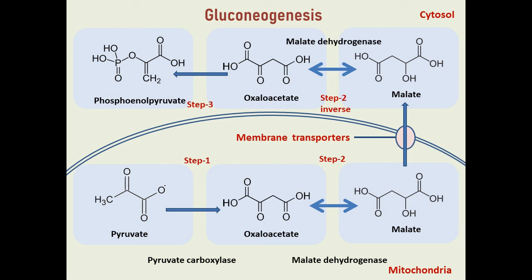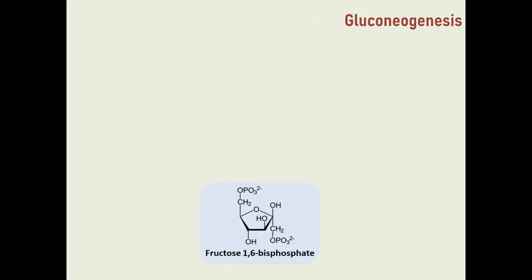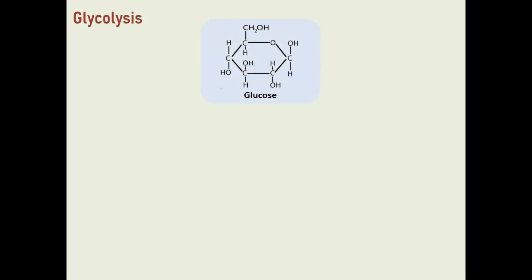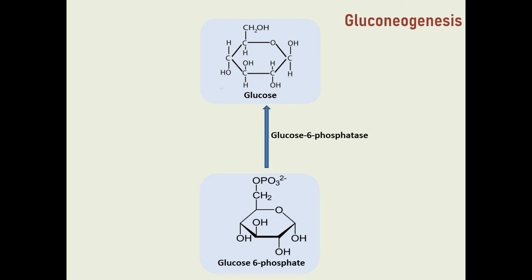The next several steps are exactly the same as glycolysis, only in reverse. The second step that differs from glycolysis is the conversion of fructose-1,6-bisphosphate to fructose-6-phosphate using the enzyme fructose-1,6-bisphosphatase. The conversion of fructose-6-phosphate to glucose-6-phosphate uses the same enzyme as glycolysis: phosphoglucoisomerase. The last step that differs is the conversion of glucose-6-phosphate to glucose using glucose-6-phosphatase, an enzyme located in the endoplasmic reticulum.